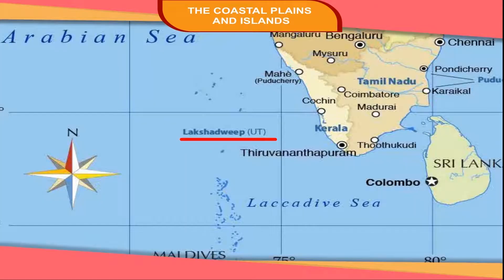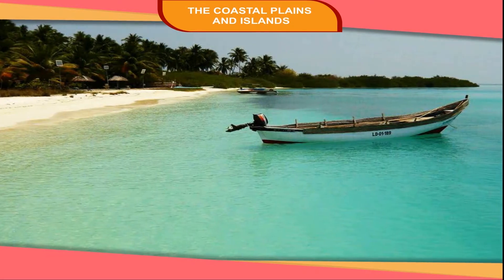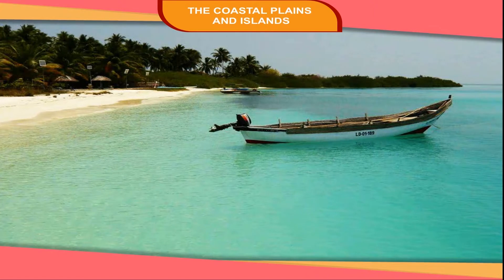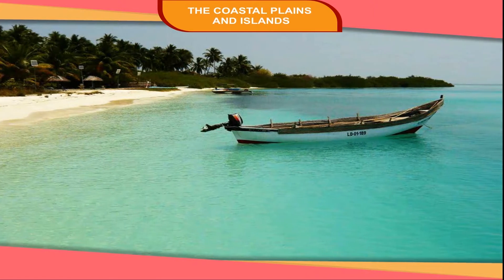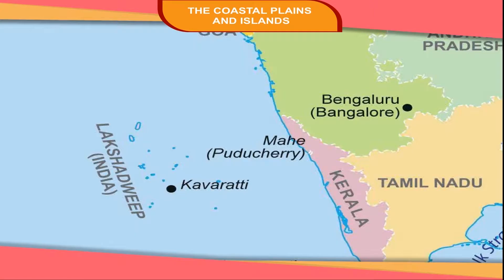The smallest union territory of India is the Lakshadweep Islands. It is a group of 36 islands, out of which only 10 islands are inhabited. Kavaratti is the capital of Lakshadweep Islands.